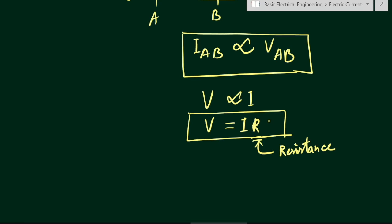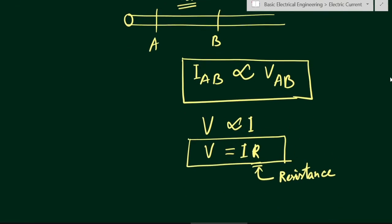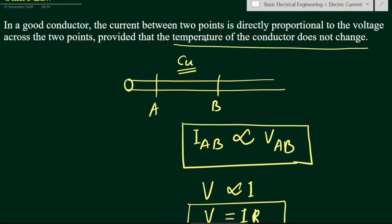Resistance is defined as the property of a substance — in this case, copper — due to which it opposes the flow of electricity, that is the flow of electrons. From point A to B, if we apply some potential V_AB, current will flow, but due to the property of copper it will exert some resistance to the flow of current. In the case of copper, this resistance is very low.